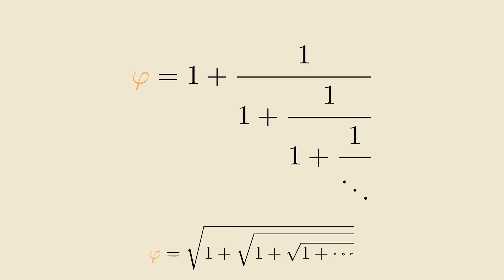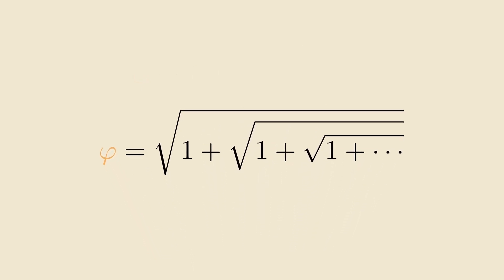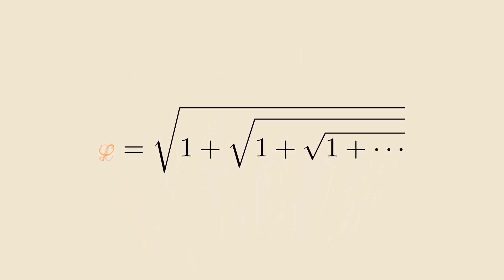Now, let's take a look at the infinitely nested square root expression. Again, to solve this, we'll set the whole thing equal to x, and we can perform the same substitution since this inner part is infinite and identical to x. So, we get x equals square root of 1 plus x.